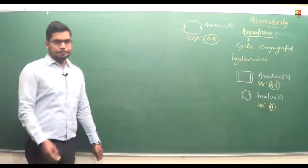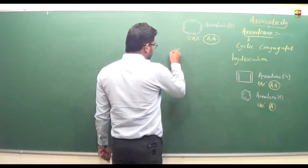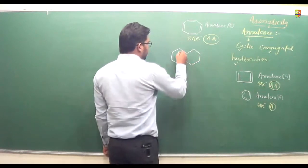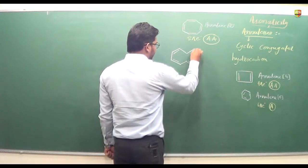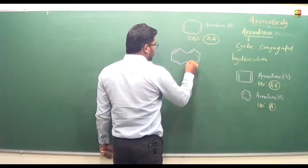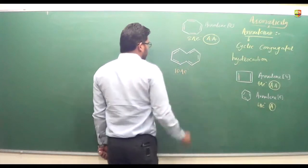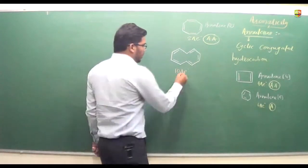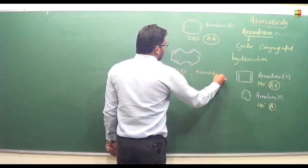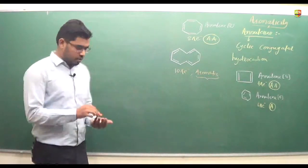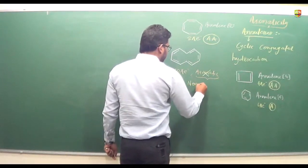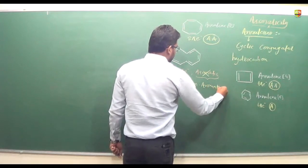In another example, if we calculate the number of pi electrons — 1, 2, 3, 4, 5 — we get 10 pi electrons. According to Hückel's rule with n equals 2, it should be aromatic. But the actual result is that it is not aromatic — it is non-aromatic in nature.